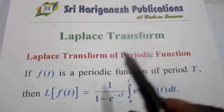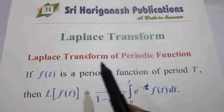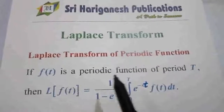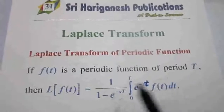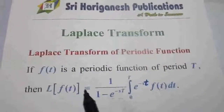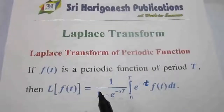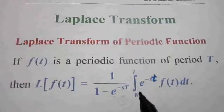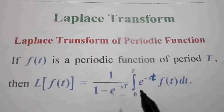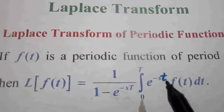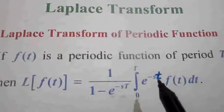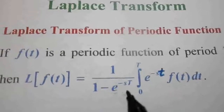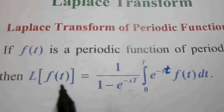Laplace transform of a periodic function. If f of t is a periodic function of period T, then L of f of t is equal to 1 by 1 minus e power minus sT, integral 0 to T of e power minus st f of t dt. This is the Laplace transform of periodic function f of t.